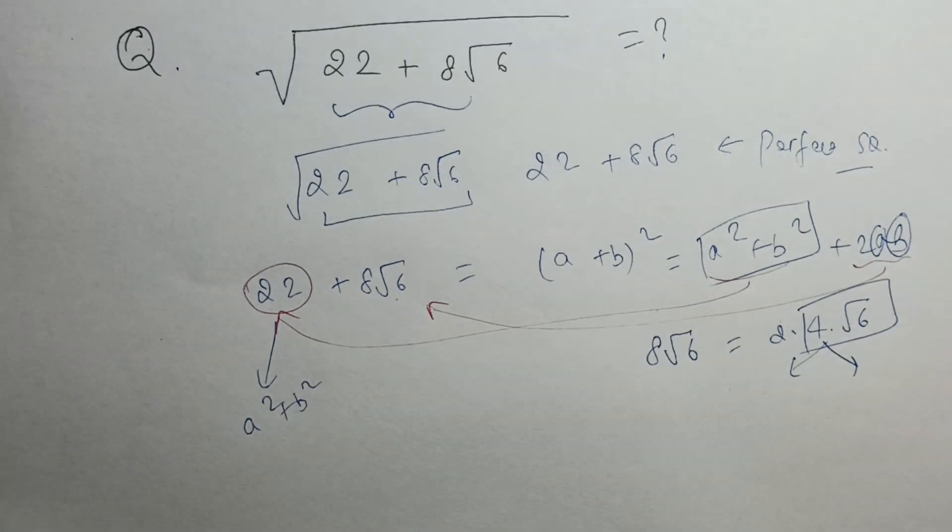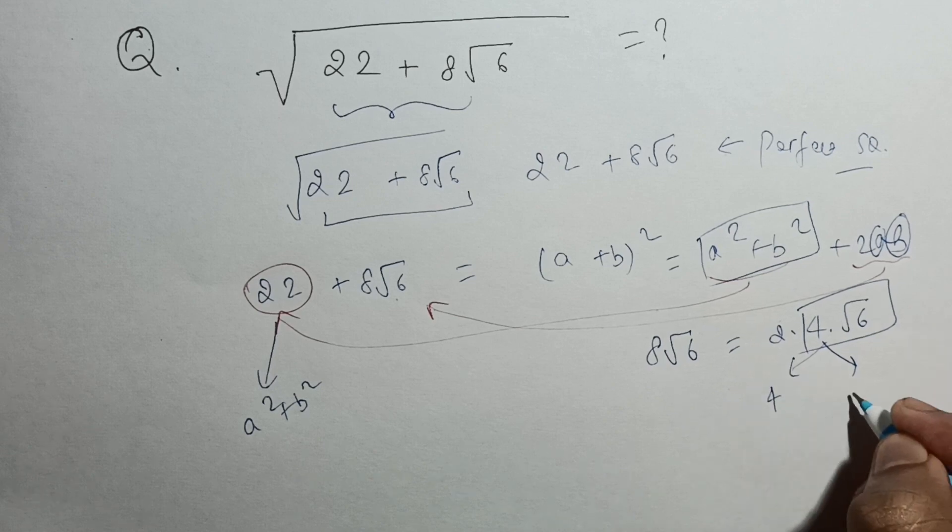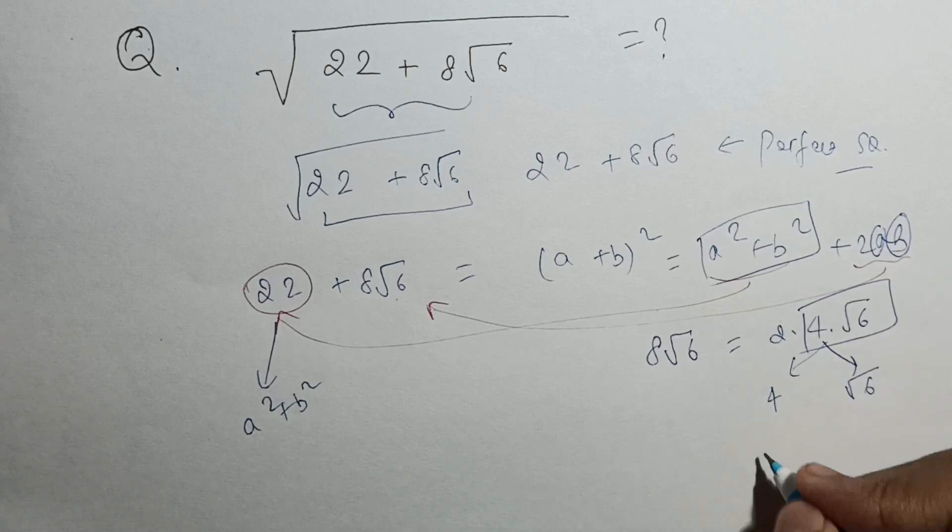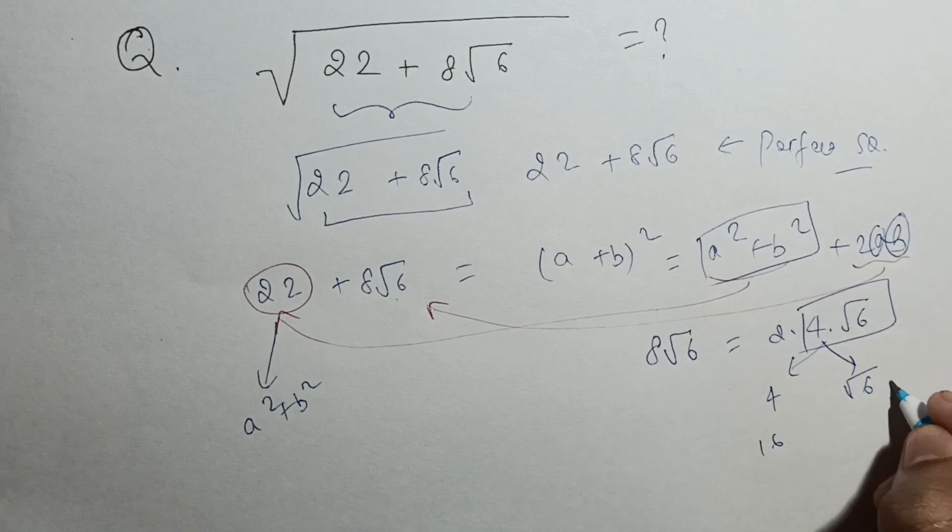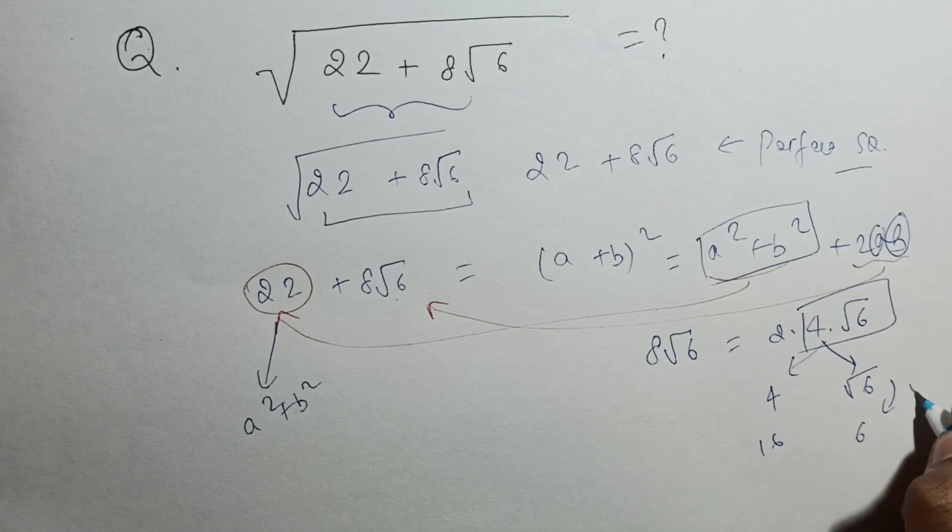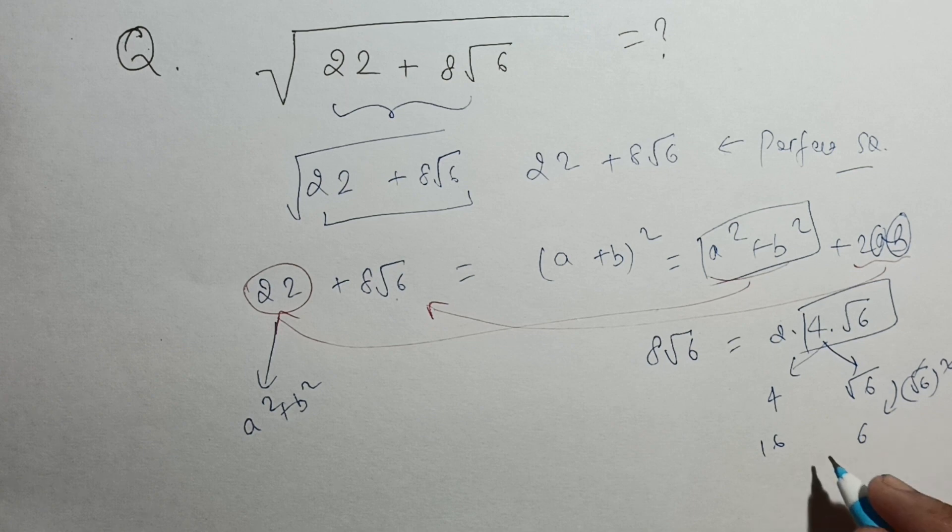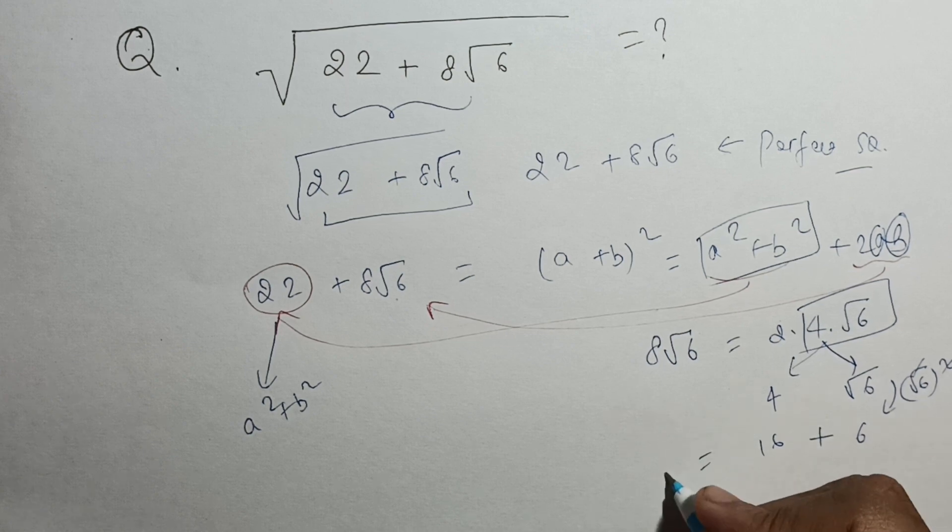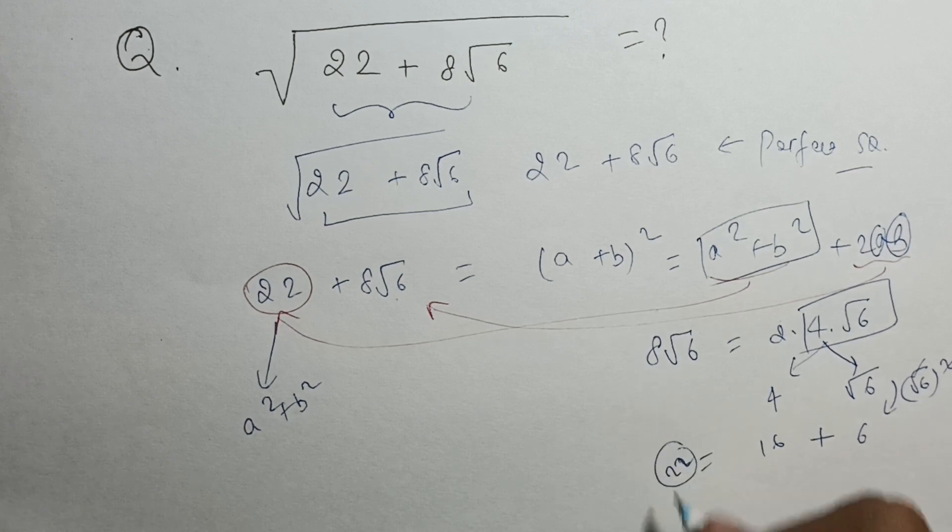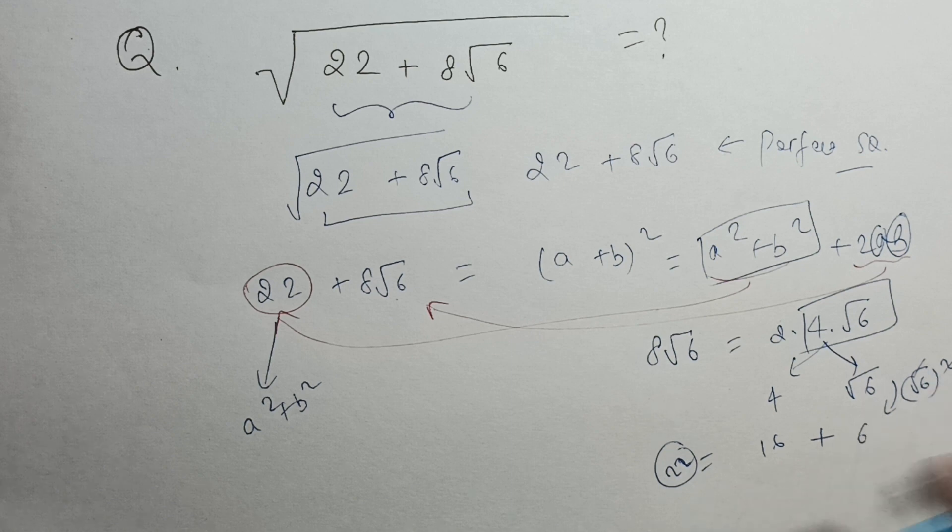So what could be those two numbers? Their multiplication is 4 root 6 and their sum of squares is 22. So these two numbers can be, let's say, 4 and root 6. If I square this, I will get 16, and if I square this, I will get 6. So 16 plus 6 will be 22. It means that I can take two numbers: 4 and root 6.